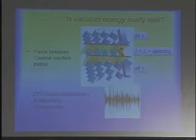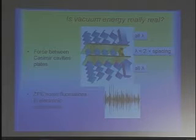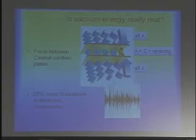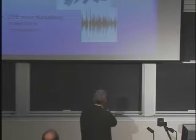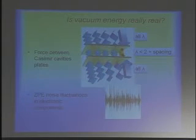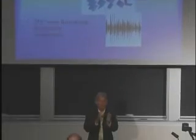Casimir, in 1948, showed theoretically that if you have two reflective plates, then in between those plates, because of boundary conditions and interference, you have only a limited number of electromagnetic modes that can exist. Whereas outside of this Casimir cavity, you can have all electromagnetic modes. Within the Casimir cavity, you get only modes corresponding to wavelengths shorter than twice the gap spacing, and outside all modes exist. The result is that there is more radiation pressure outside than inside, and so these two plates are attracted together.